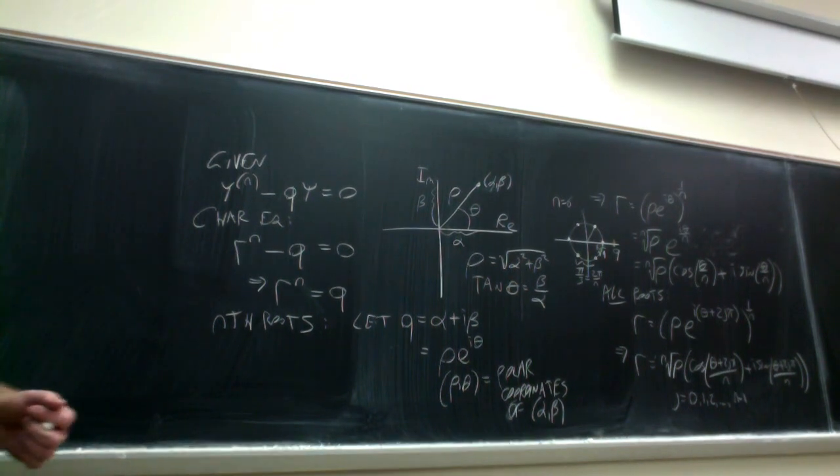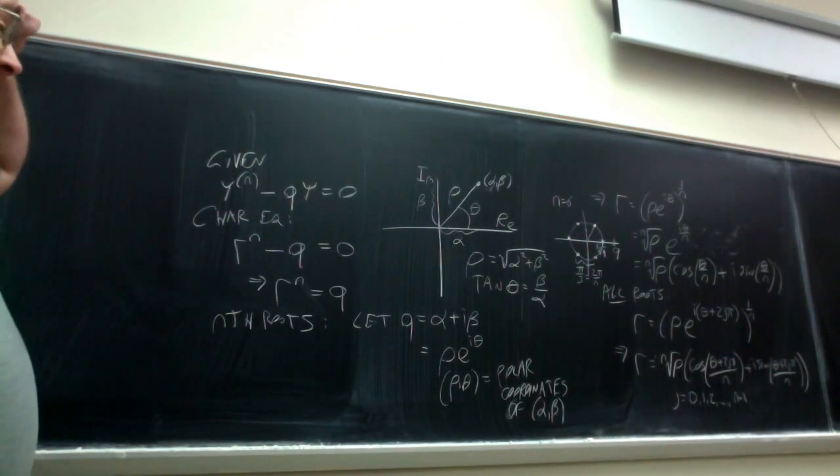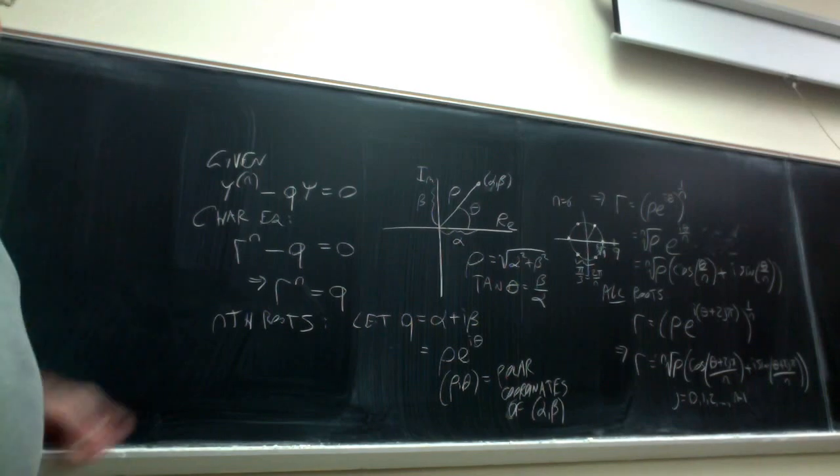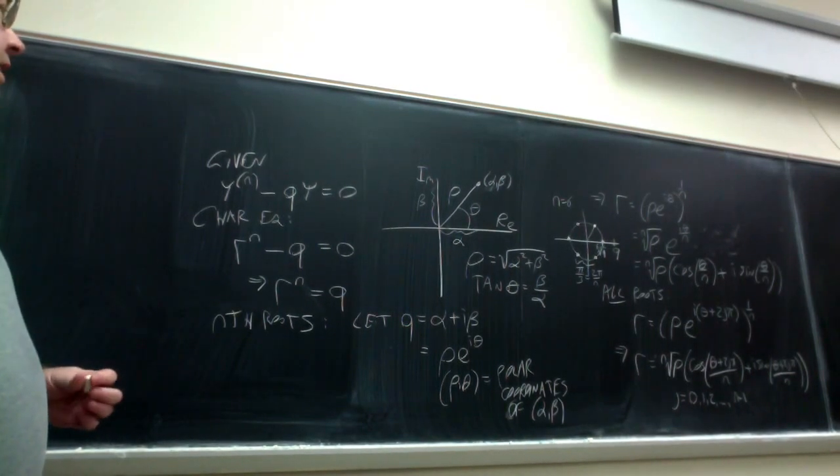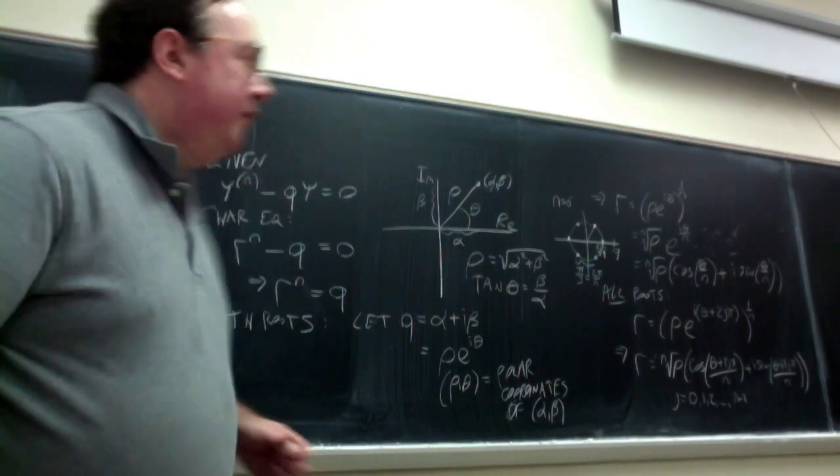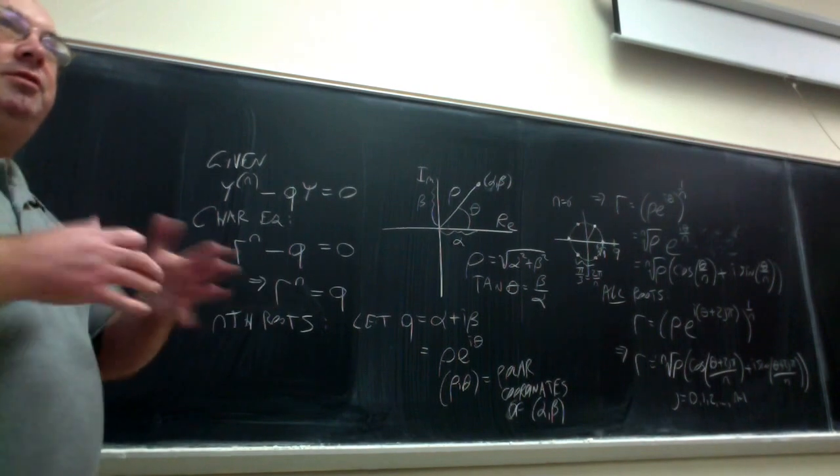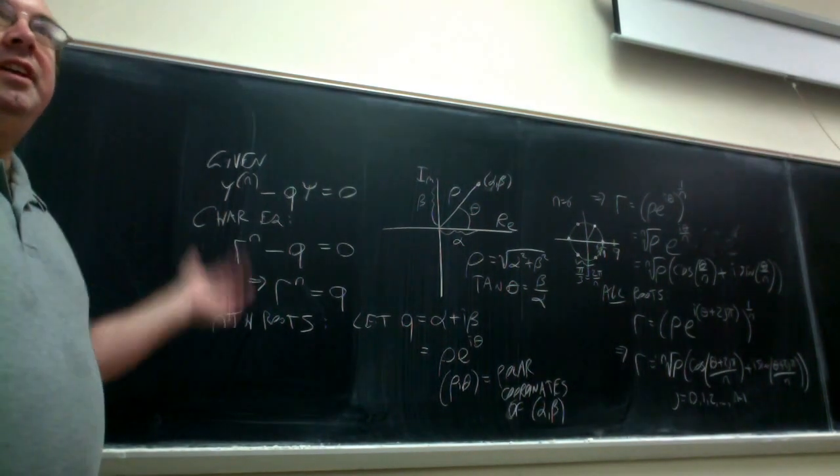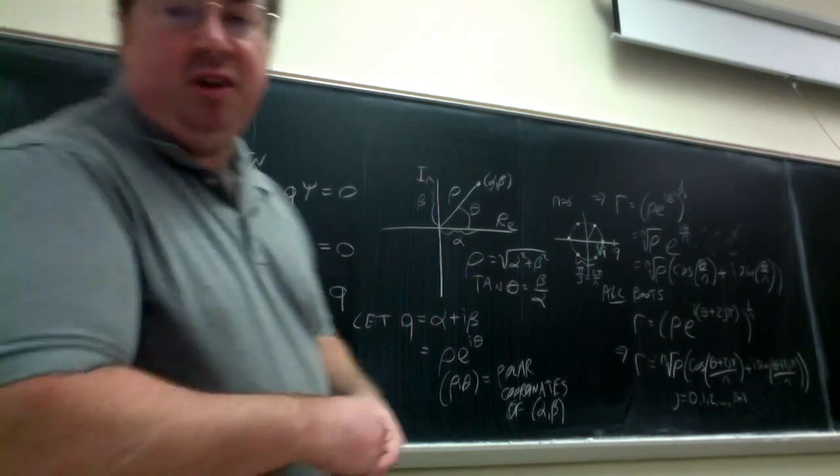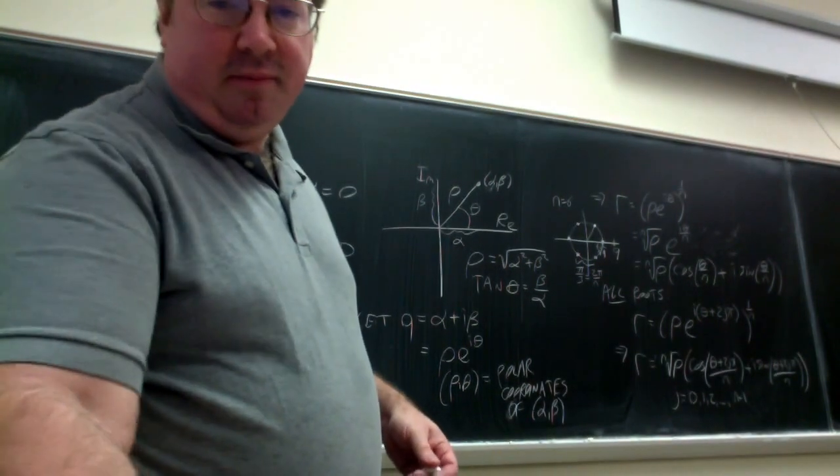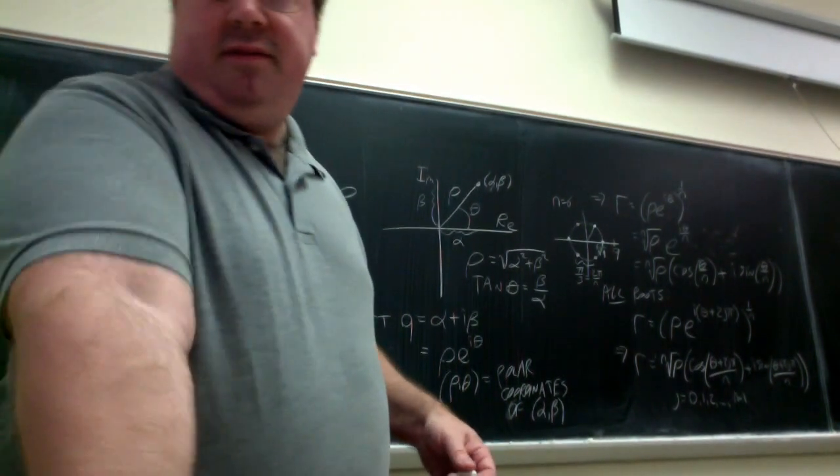So by getting the roots in this manner, you can be sure to have the general solution. Because in an nth order equation, you have to have n linearly independent functions to express everything and satisfy all your initial conditions. Any questions about this? So something that can come up on a homework problem, or possibly a test problem.